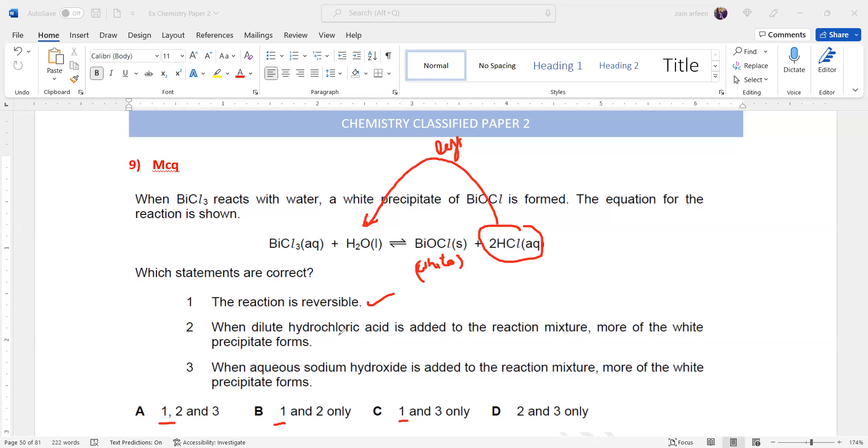So what will happen when we add hydrochloric acid? More white? No, it won't be more white - it will be less white precipitate because when I add hydrochloric acid, the equilibrium will shift towards the left-hand side.